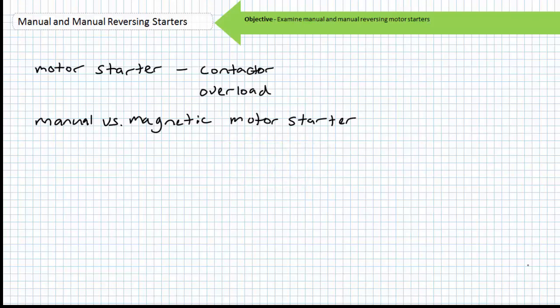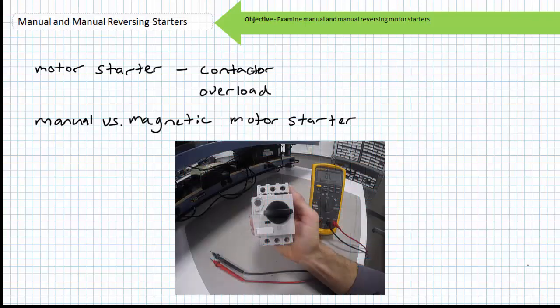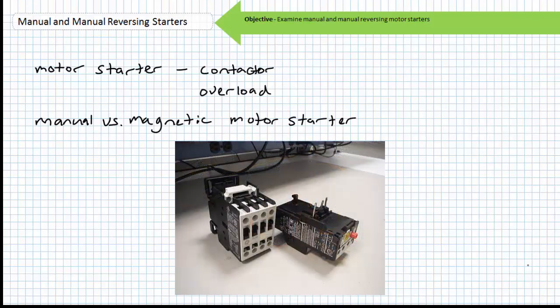As you'll recall, a contactor paired with an overload element formed the two necessary components for a motor starter: one, a means of starting or stopping the motor by making or breaking an electrical connection—the contactor—and two, a means of protecting the motor from sustained overload conditions—the overload. A contactor and overload can be integrated into a single package called a motor starter, or the pair working in combination can be considered a motor starter.